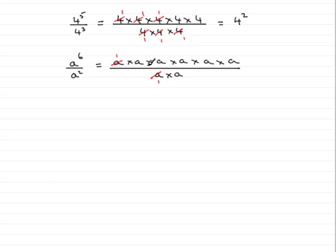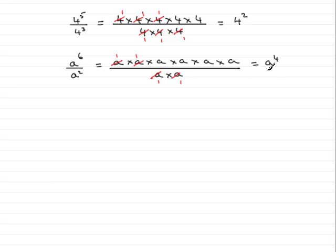And the same again with this pair: a into a goes 1, and a into a goes 1. And what have we got as a simplified result? Well on the top we've got 1 times 1, which is 1, and then a multiplied repeatedly 4 times over — so that's a to the power 4. And on the bottom we've got 1 times 1, which is just 1. Anything divided by 1 we can just ignore, so the result is simply a to the power 4.